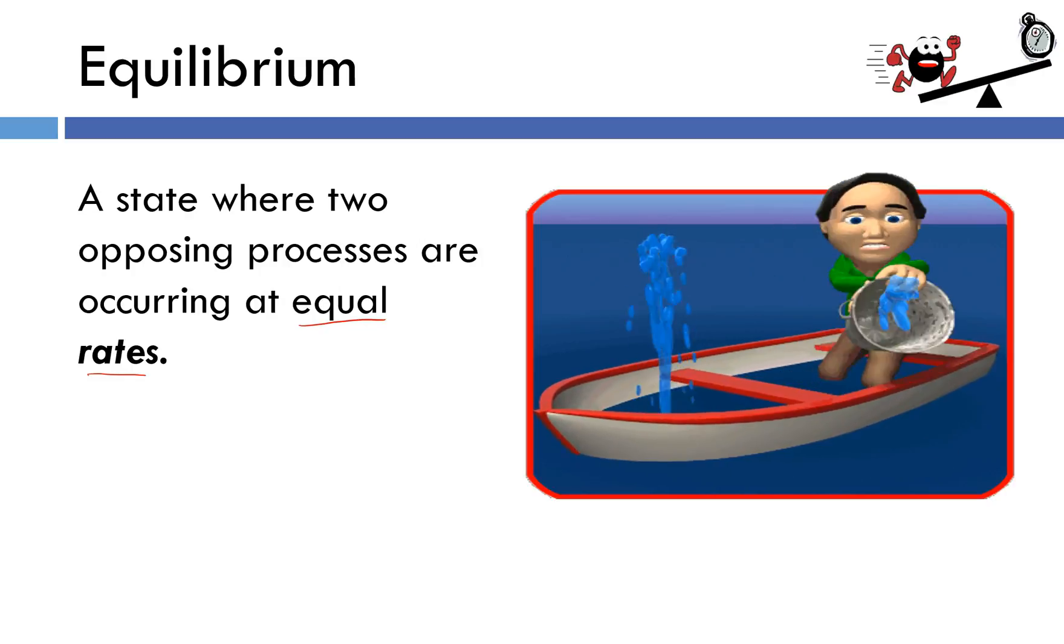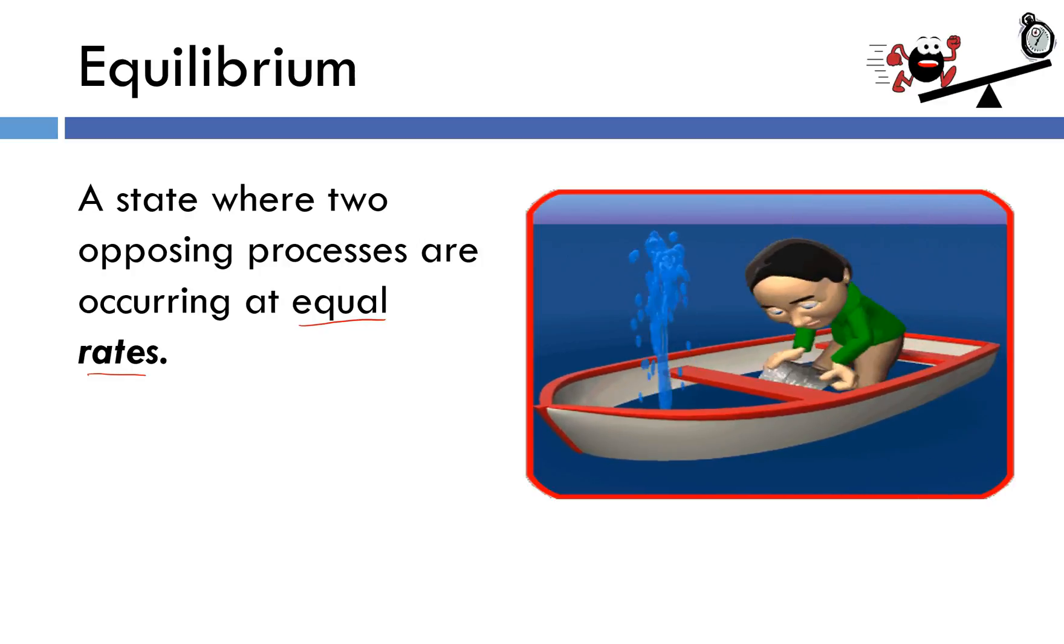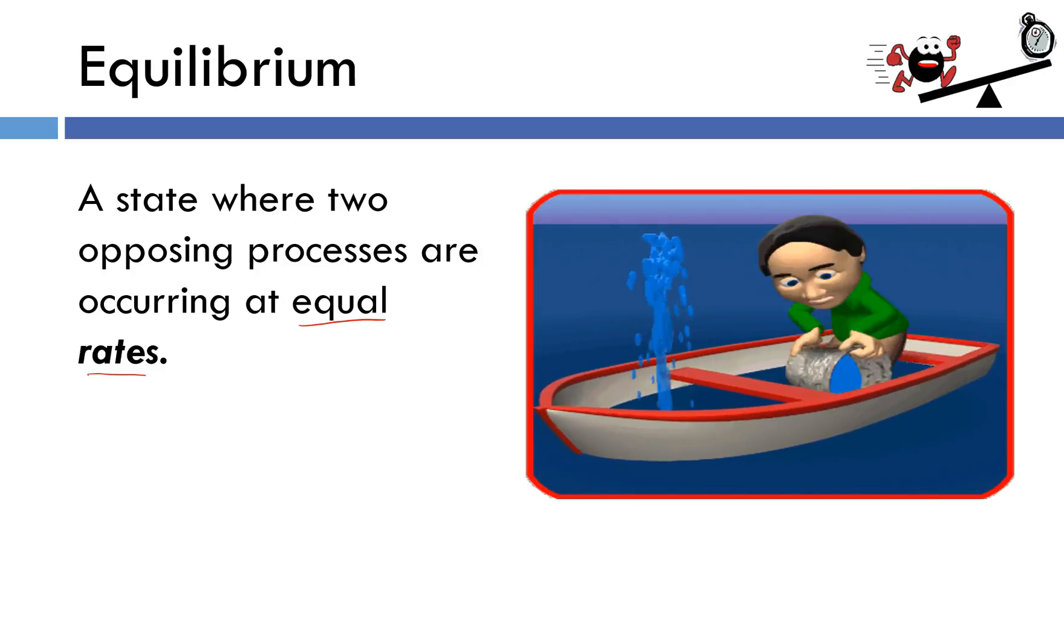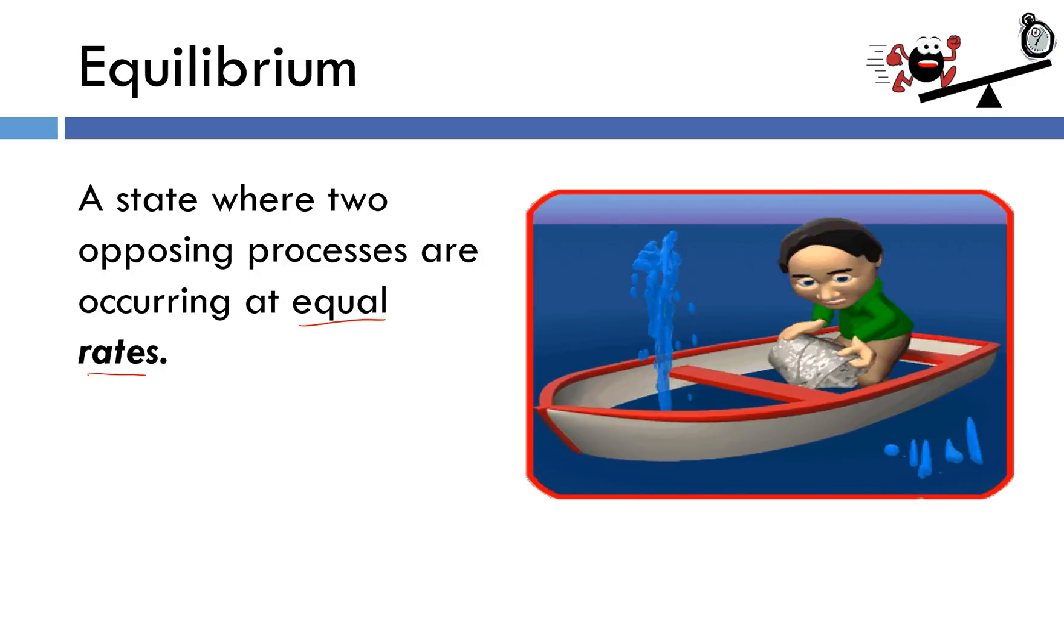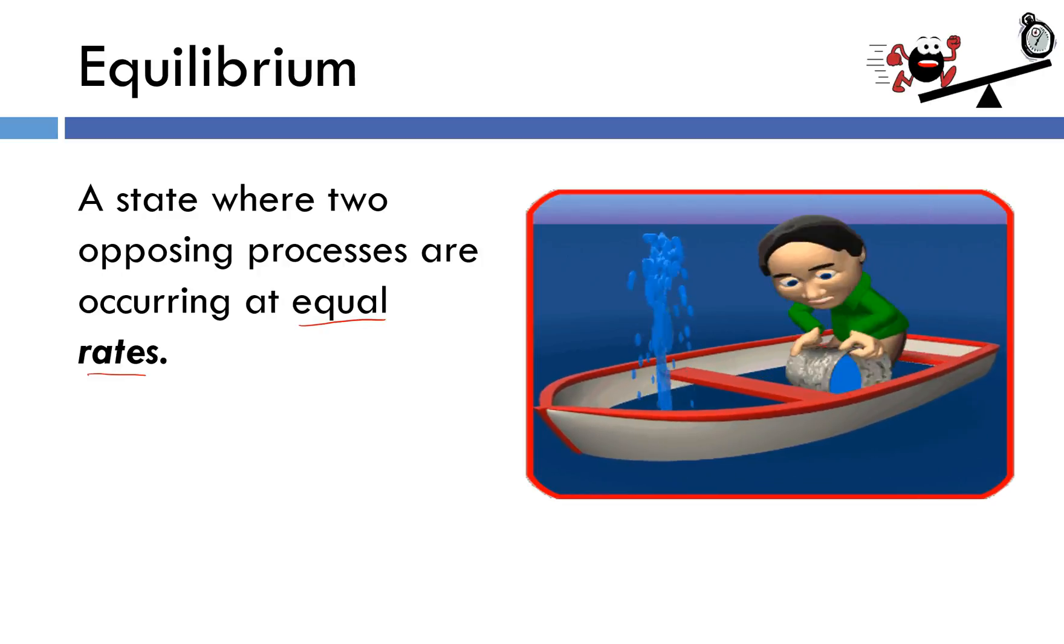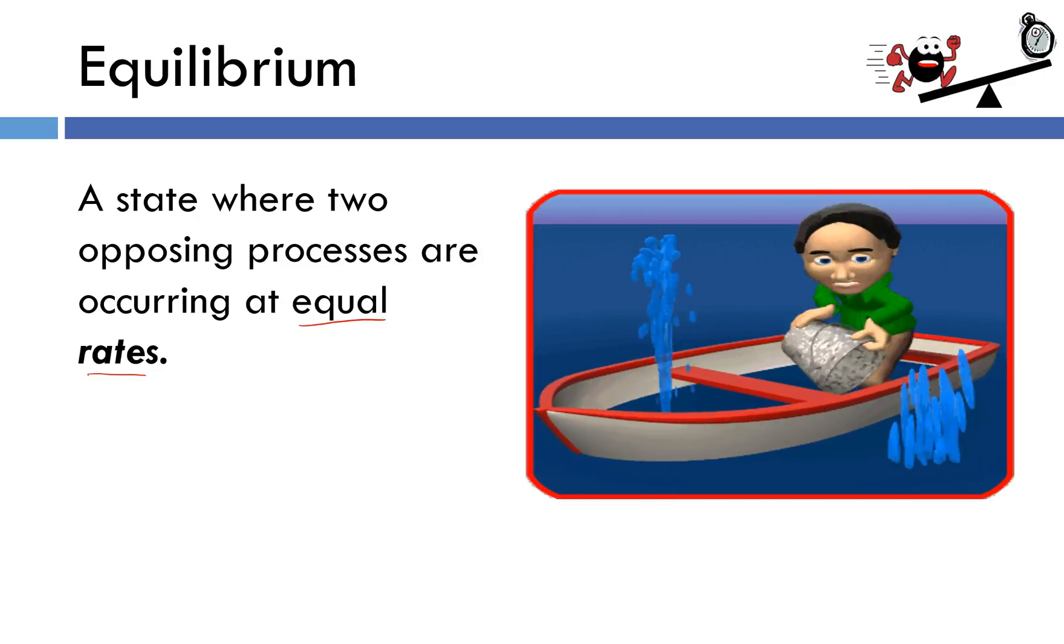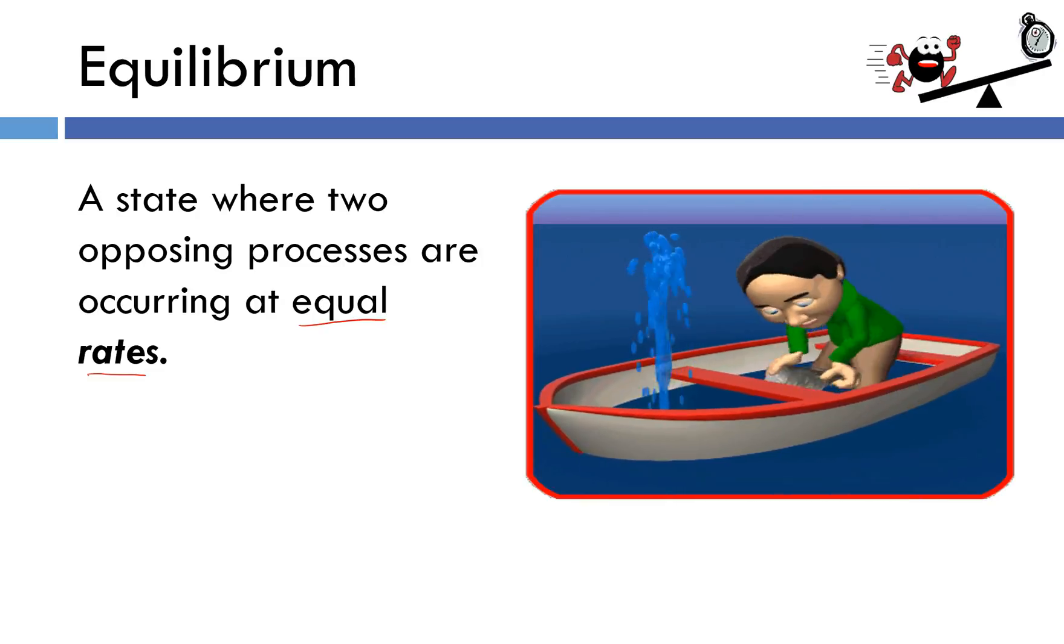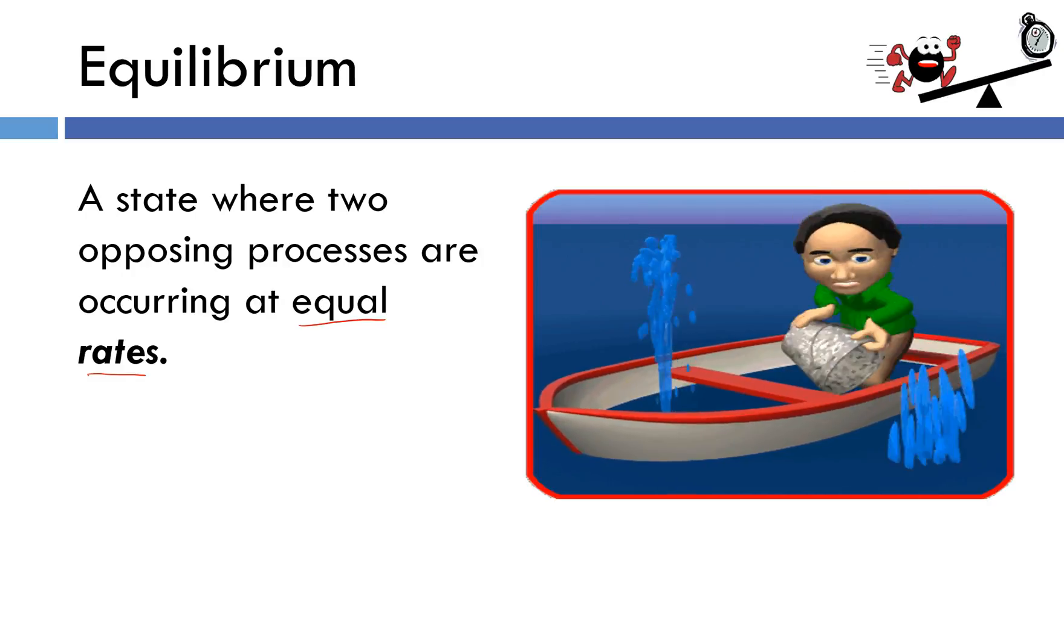If the water level is decreasing, I can assume that the rate of water being thrown out of the boat is greater than the rate of water coming into the boat. But if I look at this example, the water level doesn't seem to be changing. The boat's bobbing back and forth a little bit as the water is being thrown out, but it doesn't seem like the overall water level is changing. This is what a system at equilibrium looks like. The overall net change is zero.